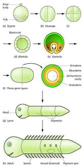During cleavage and gastrulation, the first regional specification events occur. In addition to forming the three germ layers, these often generate extraembryonic structures such as the mammalian placenta, needed for support and nutrition of the embryo, and also establish differences of commitment along the anteroposterior axis. Regional specification is initiated by cytoplasmic determinants in one part of the zygote. The cells containing the determinant become a signaling center and emit an inducing factor, which forms a concentration gradient — high near the source and low further away.